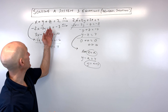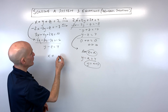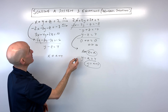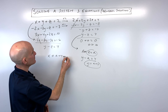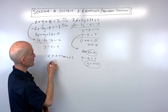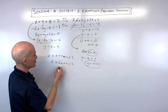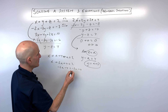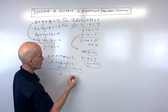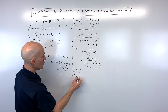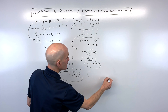Now we just have to find x in terms of a. Going back to the top equation, we substitute y equals a plus four and z equals a: x plus (a plus four) plus a equals two. That gives x plus 2a plus four equals two. Subtracting 2a and four from both sides, we get x equals negative 2a minus two.